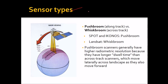There are two types of sensors. One is push broom, that is along track. The other is whisk broom, which is across track. SPOT and IKONOS are push broom, and Landsat is whisk broom. Push broom scanners generally have higher radiometric resolution because they have a longer dwell time than across track scanners like Landsat, which move laterally across the landscape as they move forward.